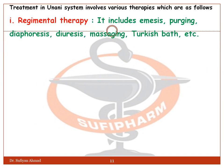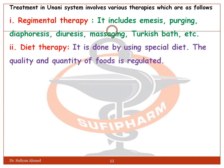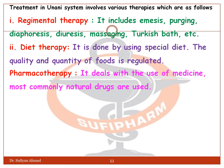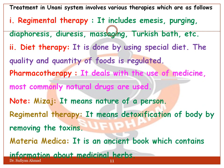Regimental therapy includes emesis, purging, diaphoresis, diuresis, massaging, Turkish bath, etc. Diet therapy is done by using a special diet where the quality and quantity of food is regulated. Pharmacotherapy deals with the use of medicine; the most commonly used are natural drugs. Regimental therapy also means detoxification of the body by removing toxins.